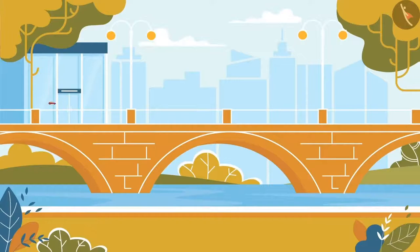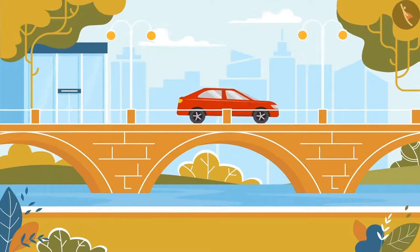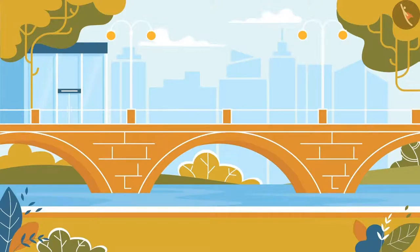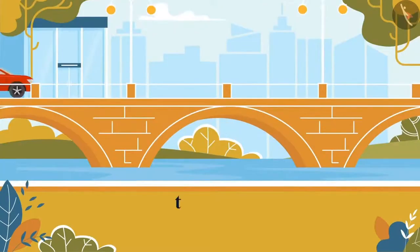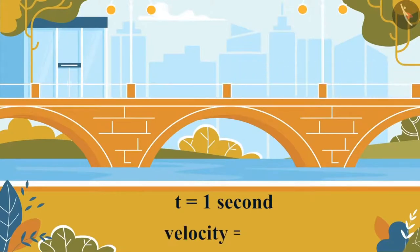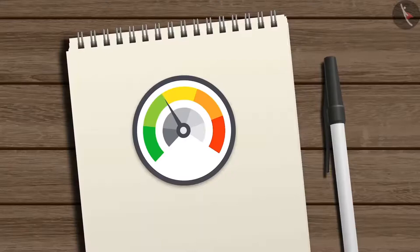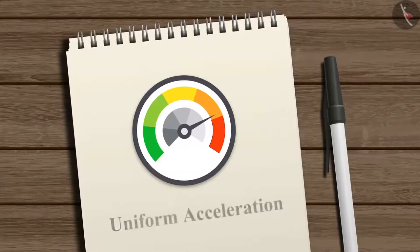Suppose a car starts from rest and moves on a straight road with a constant acceleration of 5 meters per second squared. The velocity at t = 1 second is 5 meters per second, at t = 2 seconds is 10 meters per second, and so on. Since velocity increases by an equal amount in equal time intervals, the acceleration is uniform.